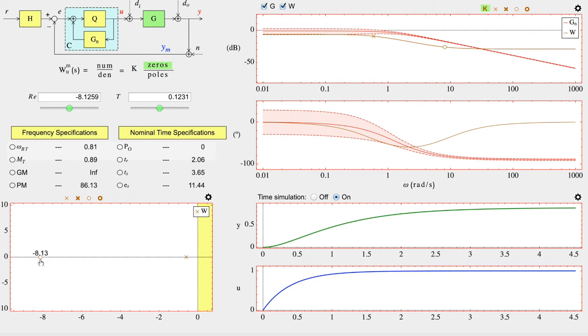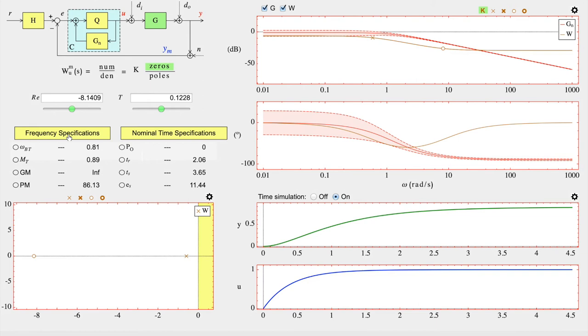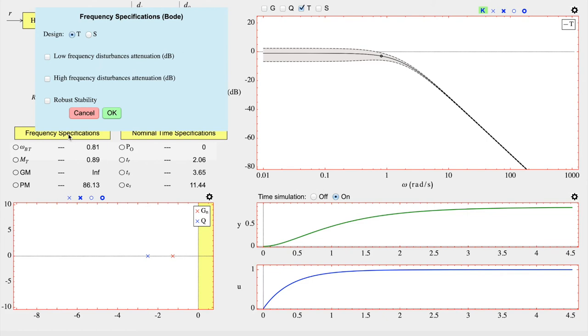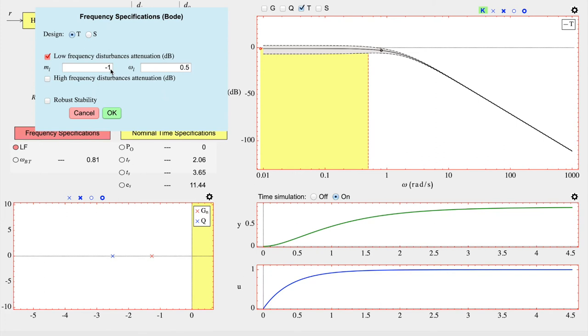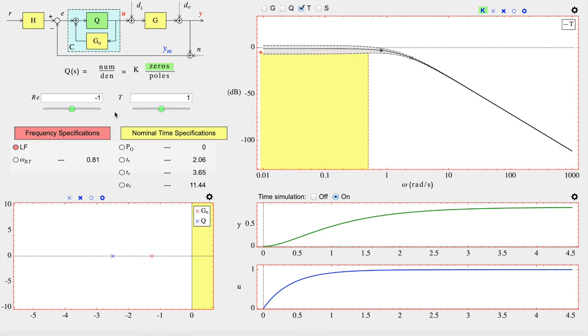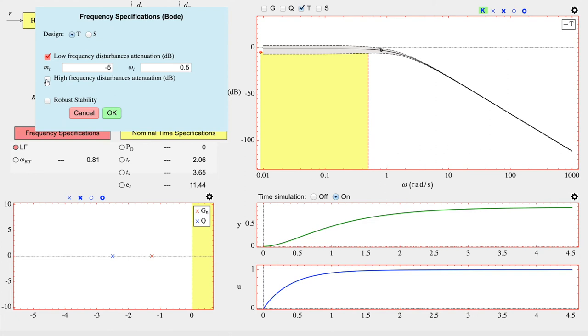Another important part of the application is defining the specifications. In this work we focus on the frequency domain specifications. To define them it is necessary to click the yellow button named frequency specifications. Then a pop-up window appears allowing to activate different types of specifications. Firstly, it is necessary to select one closed-loop transfer function, the sensitivity or the complementary sensitivity one. In this case the complementary sensitivity one is selected. Later it is possible to include specifications over the low frequency behavior. Its quantitative values can be selected using text boxes or interactively over the Bode plot. Additionally, it is possible to define specifications over the high frequency behavior. And finally, robust stability conditions can be activated.